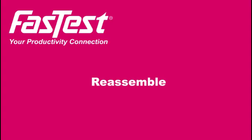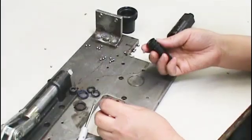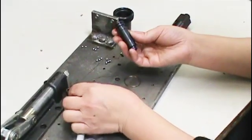Open the new seal set and remove the instructions. Apply lubricant to the largest O-rings and use a pick or screwdriver to aid in installation.